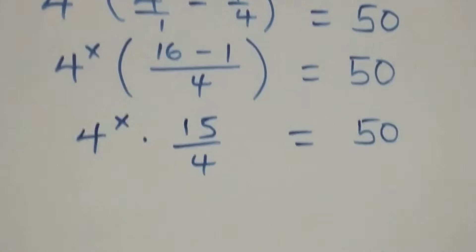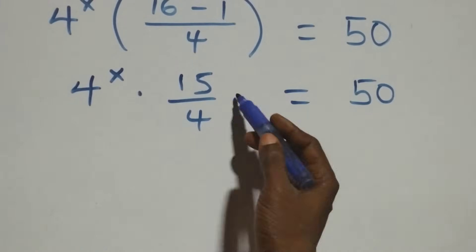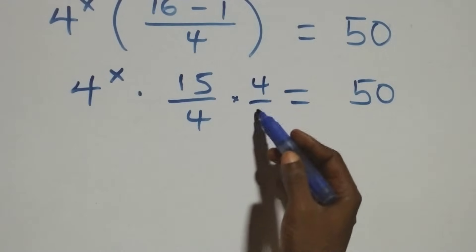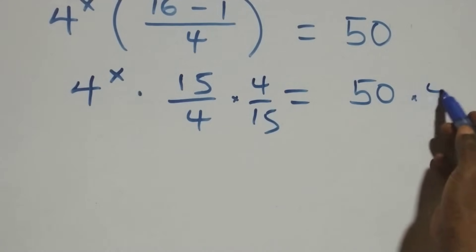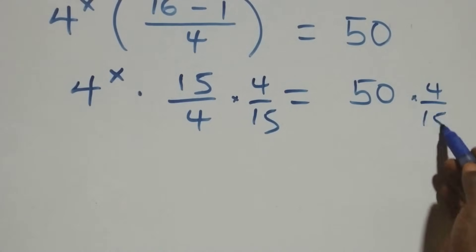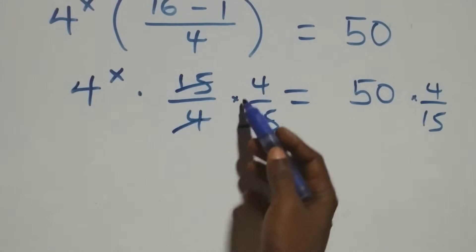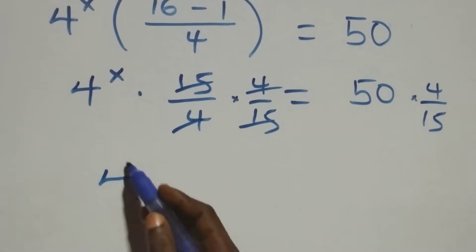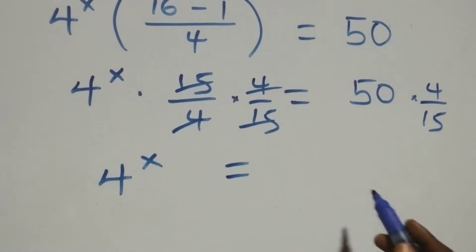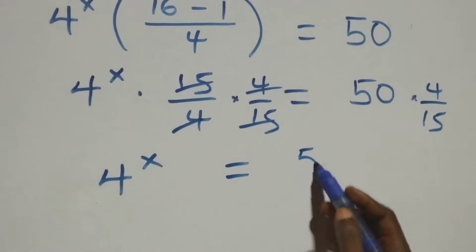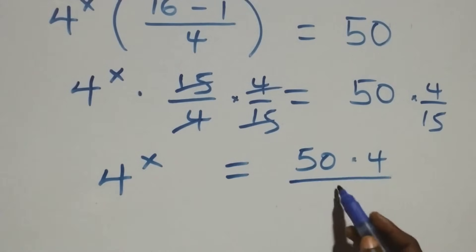To remove 15 over 4, we multiply both sides by 4 over 15. The 15s cancel each other and the 4s cancel each other, giving us 4 raised to power x equals 50 times 4 all over 15.